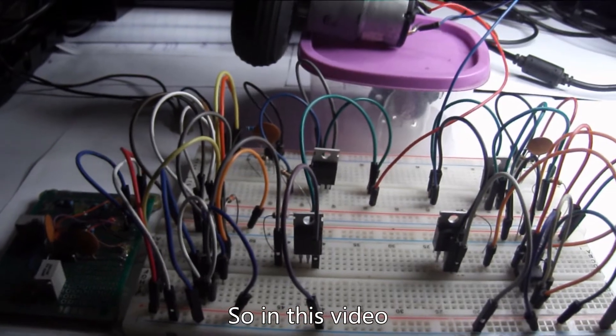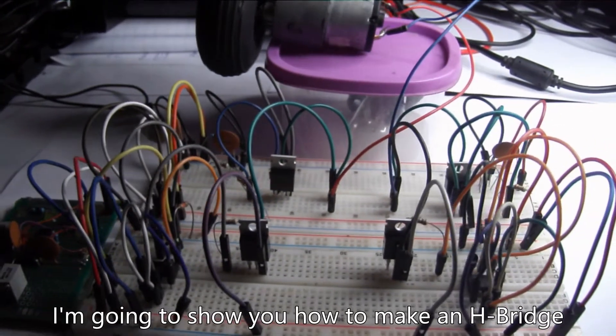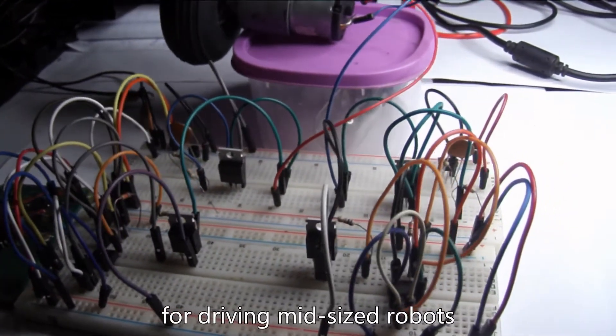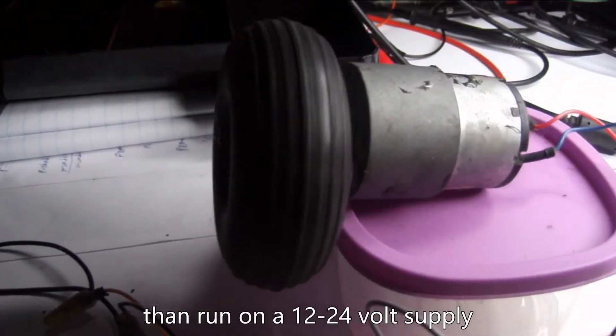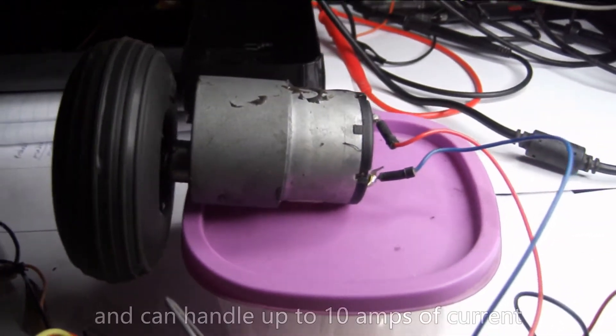So, in this video, I'm going to show you how to make an H-bridge for driving mid-sized robots that run on a 12-24 volt supply and can handle up to 10 amps of current.